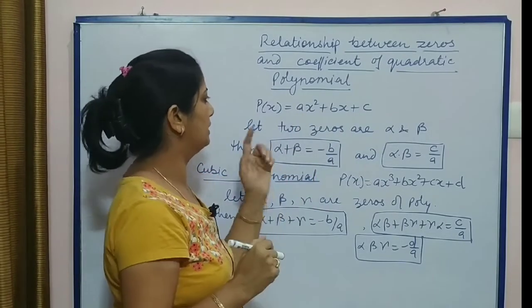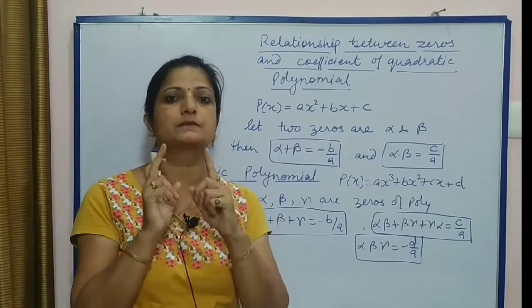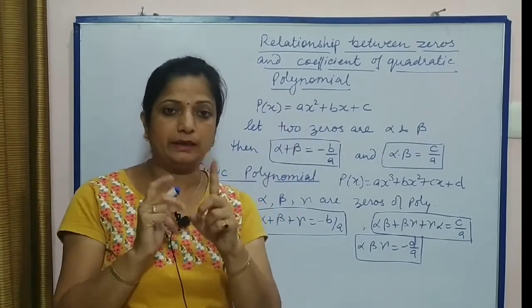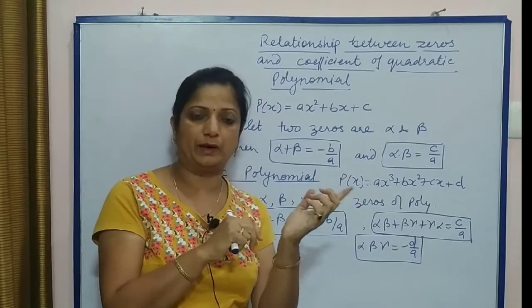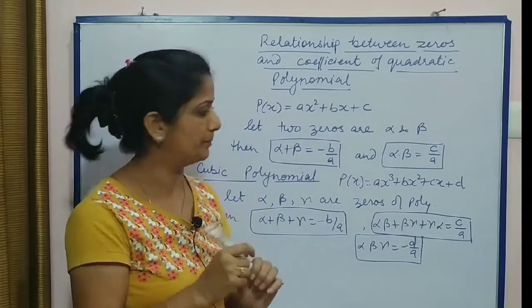Standard quadratic polynomial ka jo form hai, that is P(x) = ax² + bx + c. What is a? a is coefficient of x². What is b? Coefficient of x. And c is here constant term.